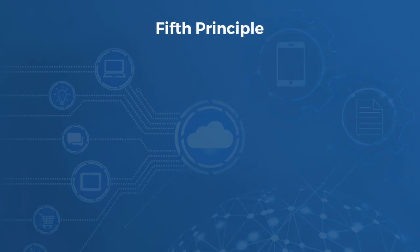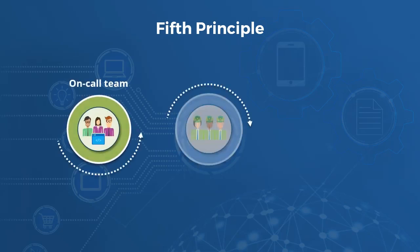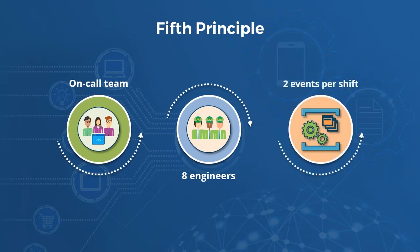The fifth principle effectively deals with ensuring adequate staffing levels. Clearly, this will depend on the structure of your organization and how often issues tend to arise and how long those issues generally take to address. But using some arbitrary values — for an on-call team of, say, eight engineers, with two events per shift per person on average — this results in a maximum of 16 events that can be effectively handled. So if you are consistently encountering more than this, you will very quickly start to burn out your staff and ultimately be unable to keep up with the demand.